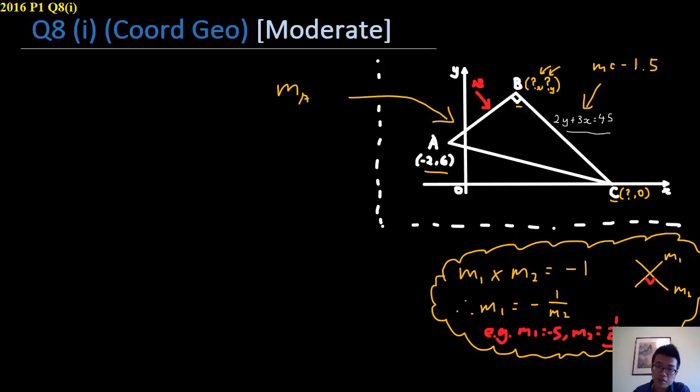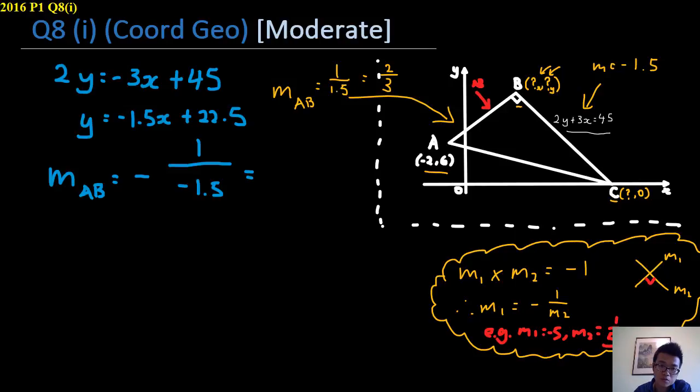As a result, gradient of AB is equal to negative 1 over negative 1.5. So you have this, and in the typical calculator, you get 2 over 3. So just as a refresher, 2 over 3.